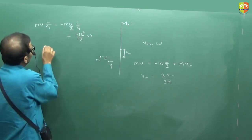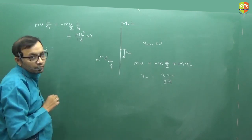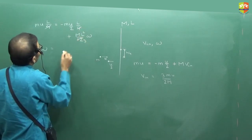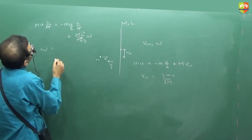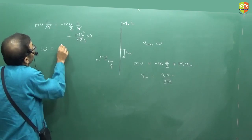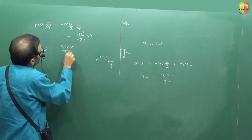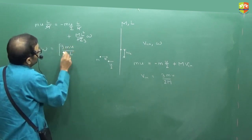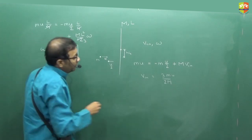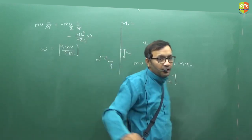How much omega will come from here? 9 m u by 2 into l. 9 m u by 2 m l. No sir, 2 capital m l. 2 capital m l. How many of you have got VCM? Omega? Why are you not getting it?